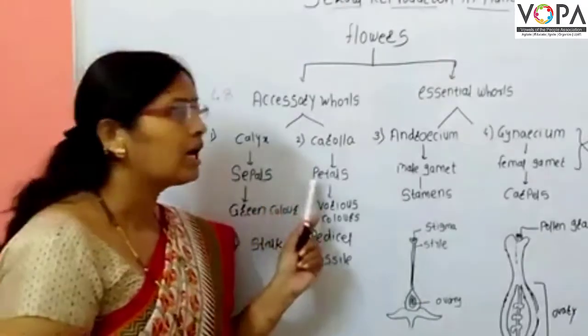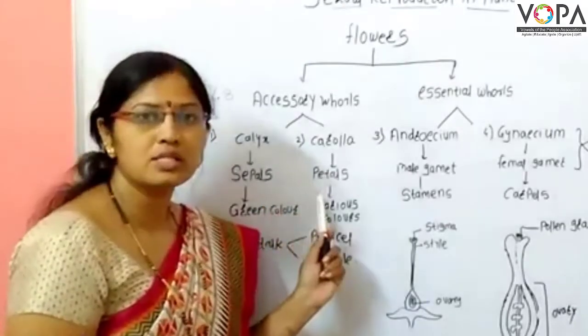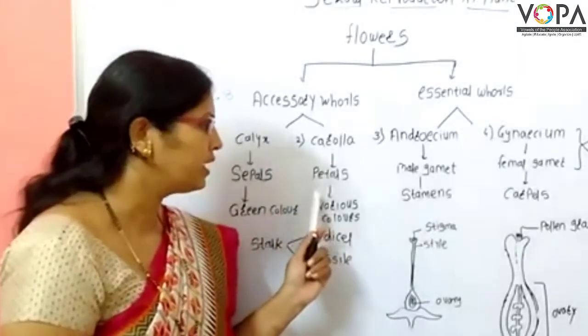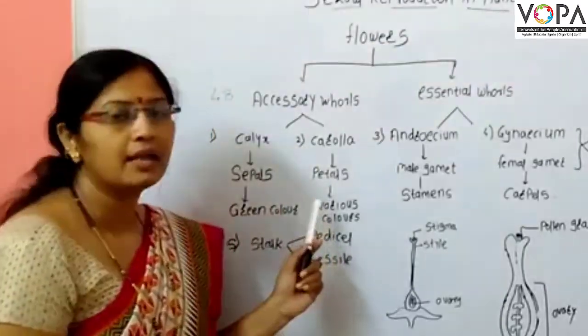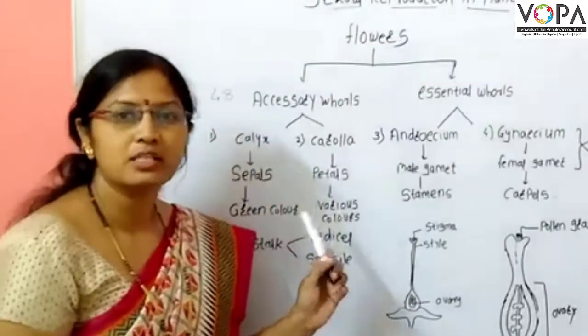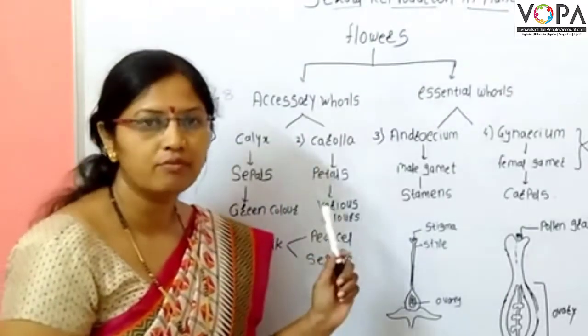Corolla consists of petals. They are present in various colors and forms.